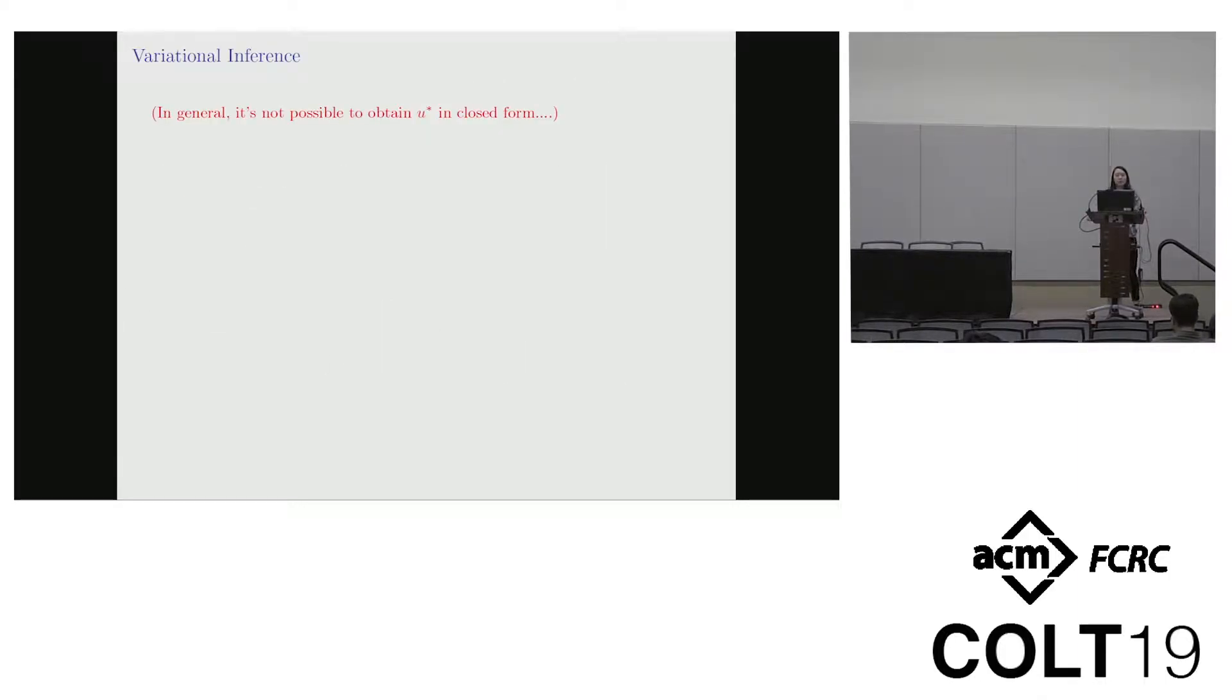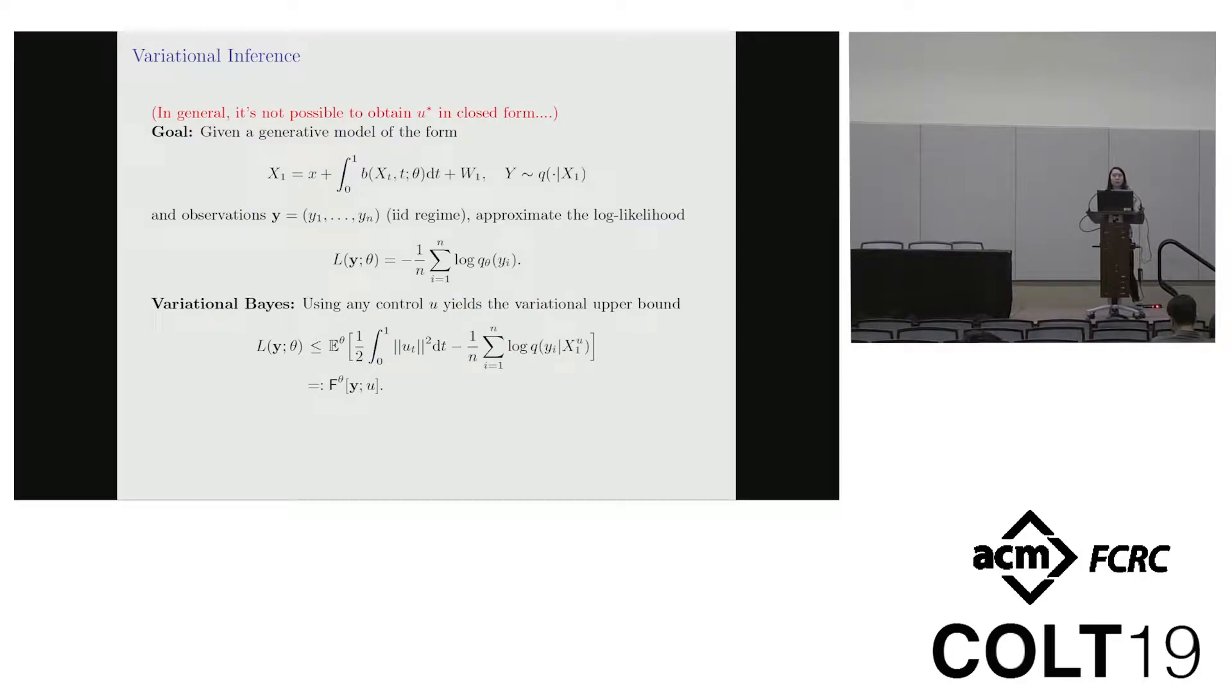So of course, in general, it's not possible to solve the Bellman equation and get the optimal control in closed form. So let's consider instead the problem of approximating the log likelihood using some IID number of observations. So again, via some substitution, we see that we sub in the negative log likelihood for the cost function. We get the variational principle in the form that's readily used for variational Bayes. So free energy minimization will tighten the upper bound on your true log likelihood. And this just means that you pick some nice class of controls and your favorite optimization method, you go to town and you'll end up at a local optimum.